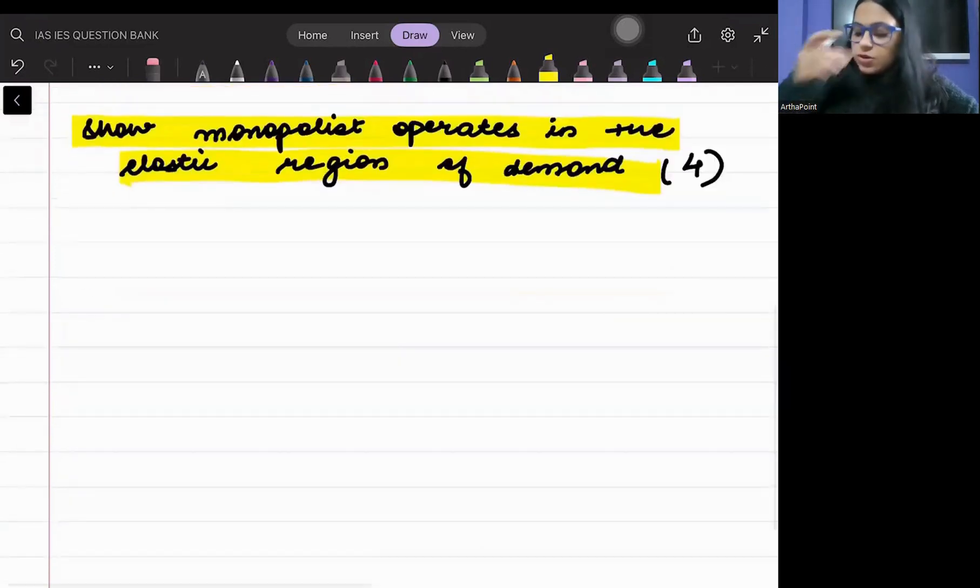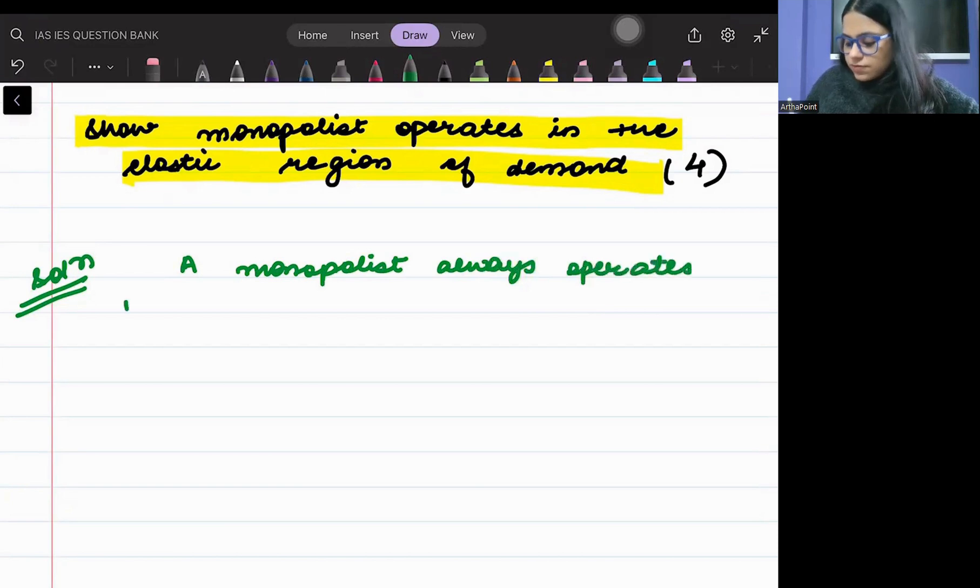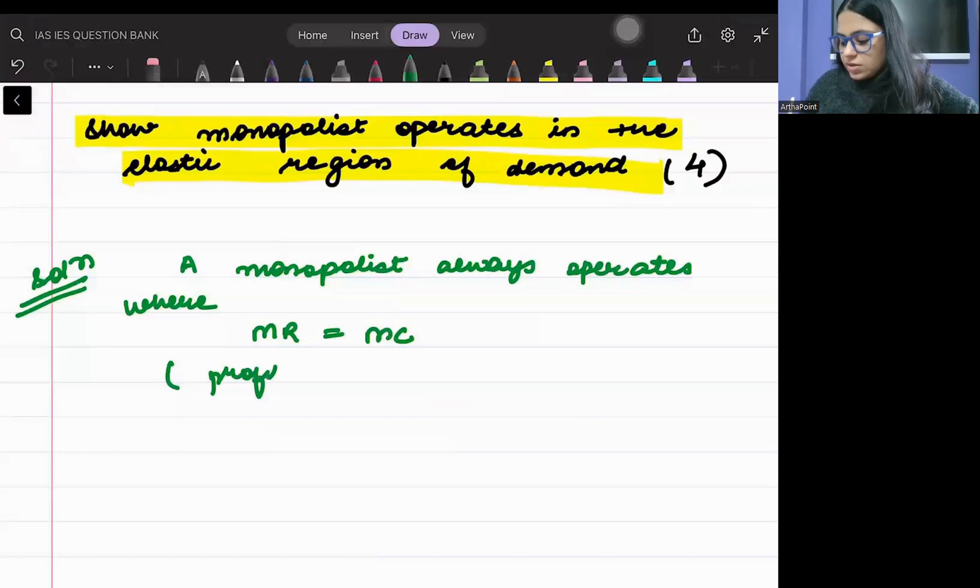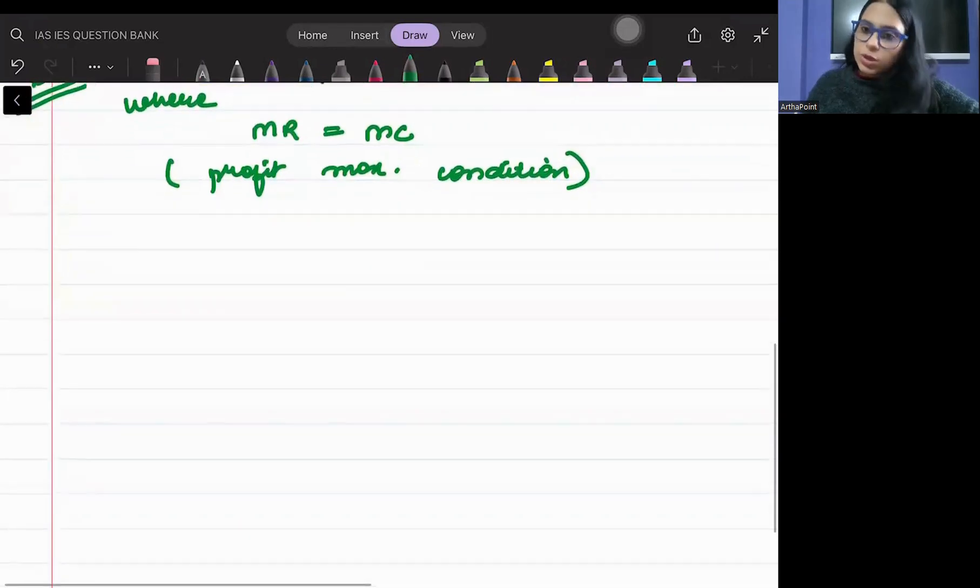In order to solve this, we will start writing solution. We know that a monopolist always operates where MR is equal to MC. This is its profit maximizing condition. So the profit maximizing condition of a monopolist is where MR is equal to MC.